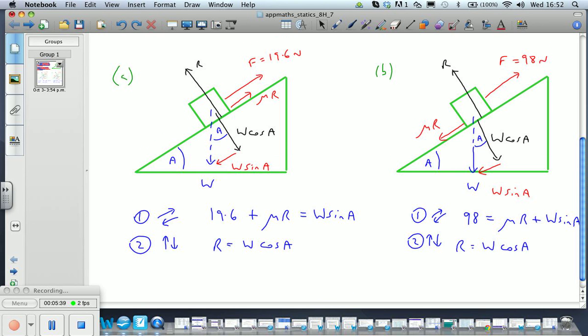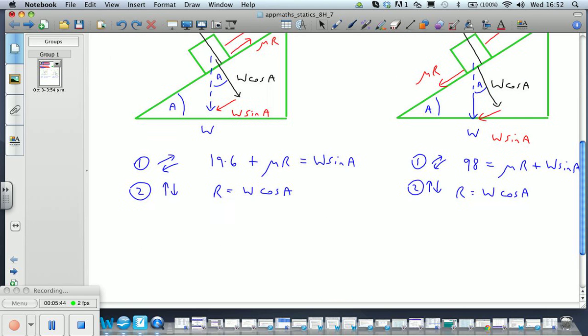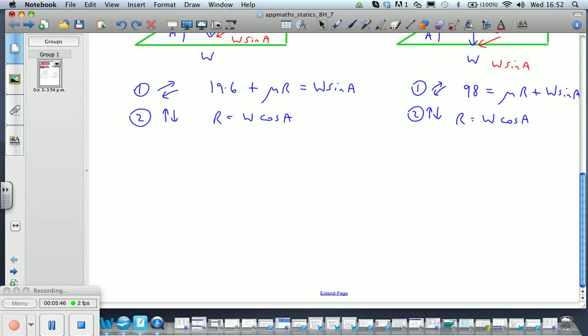So how can we combine these to good effect? We have our analysis here for both, and we can therefore say 19.6 + μR = W sin A, or 19.6 + μR = 98 sin A.